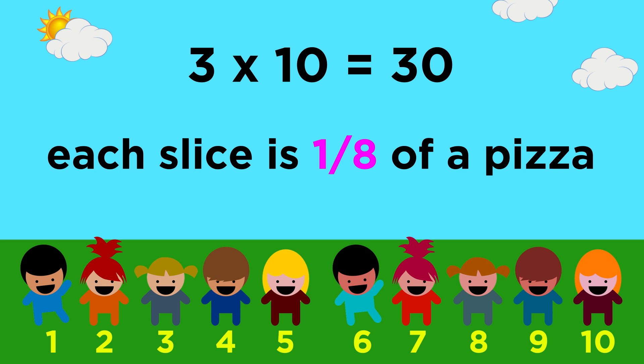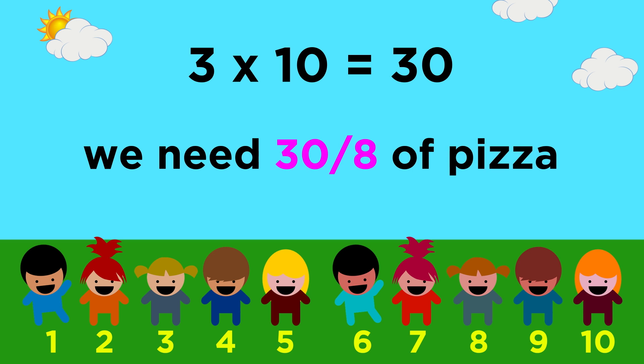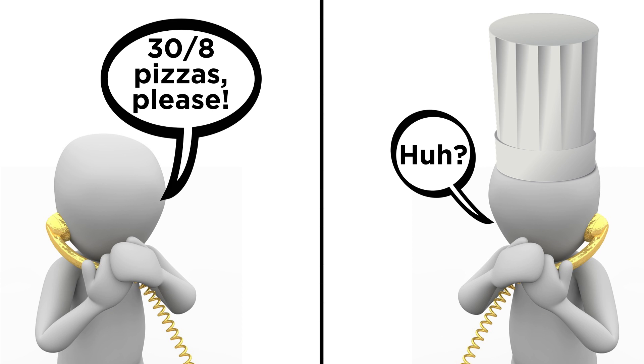Since each slice is one eighth of a pizza, we could say that we need thirty eighths of a pizza. But when we call to order, we wouldn't say it that way. We need to order a specific number of whole pizzas. So how many do we need?